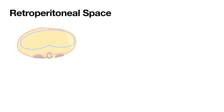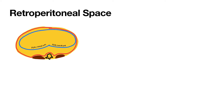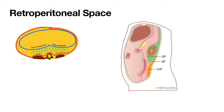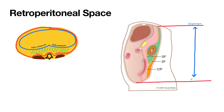Before we talk about retroperitoneal abscess, we need to understand a few concepts of retroperitoneal spaces. If we look at the diagram on the left side, the blue line indicates the peritoneum and the red line indicates the fascia transversalis. The space between the peritoneum and the fascia transversalis is called the retroperitoneal space. This retroperitoneal space extends from the diaphragm on top to the pelvic brim below. It is a closed space superiorly; however, inferiorly it opens into the pelvis.